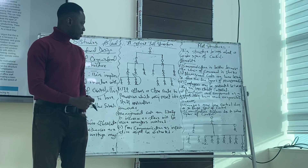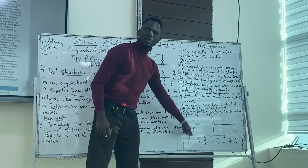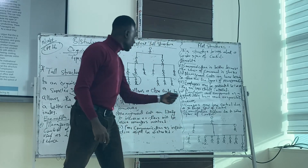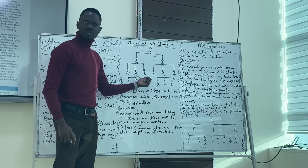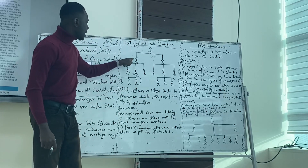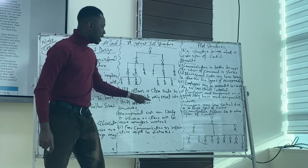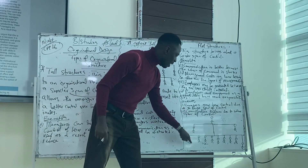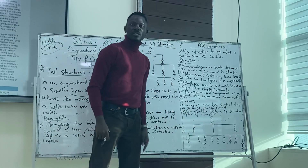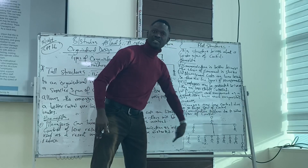This is the wider span of control, and this is the tall structure. The difference is that in the tall structure you have few subordinates, whereas in the wider span of control you have many subordinates — that's the wideness.